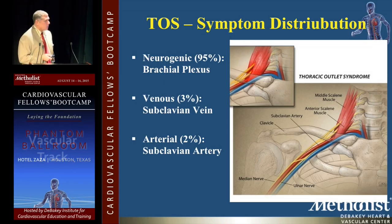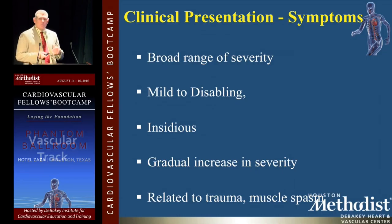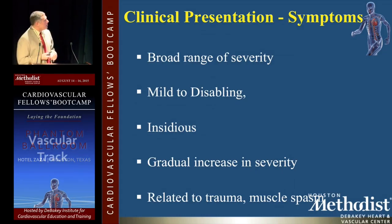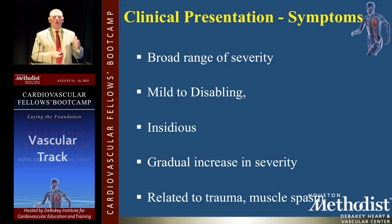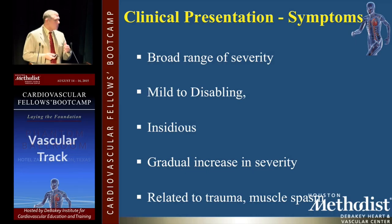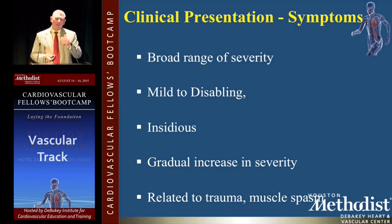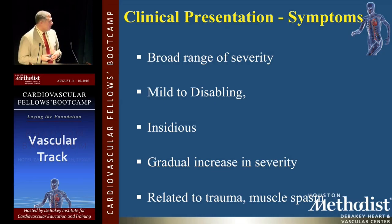Neurogenic is the most common, then venous, and then arterial. But the symptoms are really odd — there's a wide, broad range of severity. They can be mild to completely disabling. They're insidious. You try to find a pattern and talk to them from beginning to end, and it's hard to figure it out. There's no stepwise fashion. Sometimes they'll be good, and the next day or next month they're terrible. Gradual increase in severity? Not always.